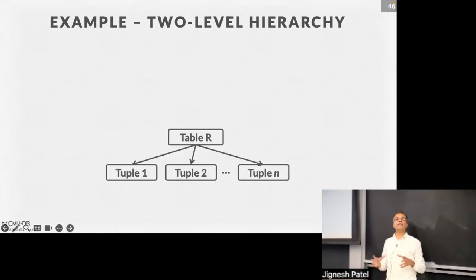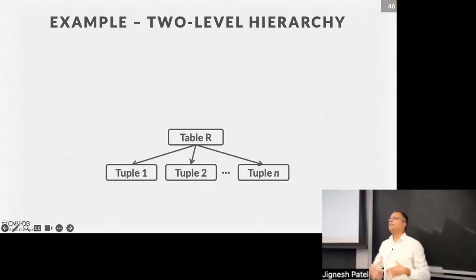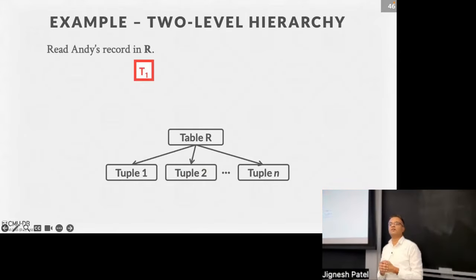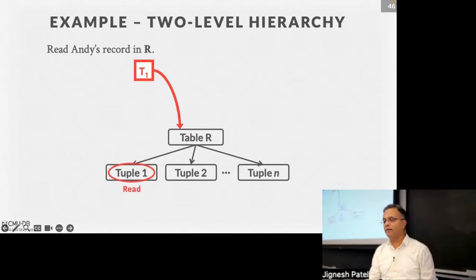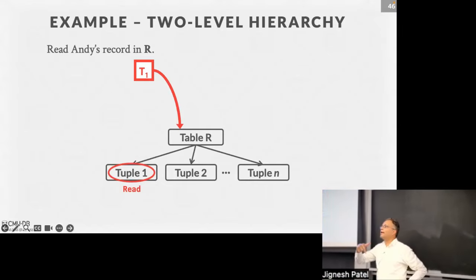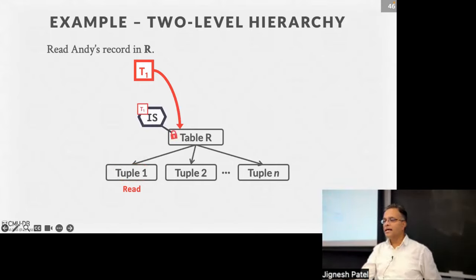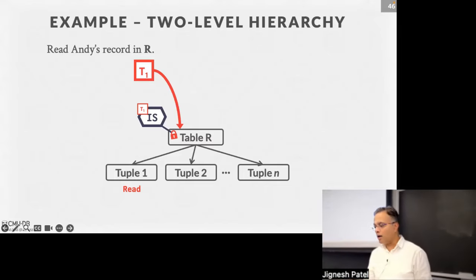There's also an SIX lock — I have a shared lock on everything below, but if I need to grab something in exclusive lock mode I will grab an X lock explicitly. Let's look at a couple of examples. Imagine a very simple database: one table and a bunch of tuples below it. We're trying to get as much parallelism as possible without acquiring a lot of locks, because acquiring locks has overhead — you have to put stuff in the lock table and do deadlock management.